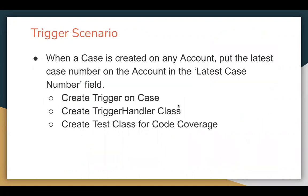Let's understand the requirement of this trigger scenario first. When a case is created on any account, we need to put the latest case number on the account in the latest case number field. So there should be a field called latest case number available on the account record, and when you create any case related to a particular account, the recently created case number should be populated under this latest case number field.